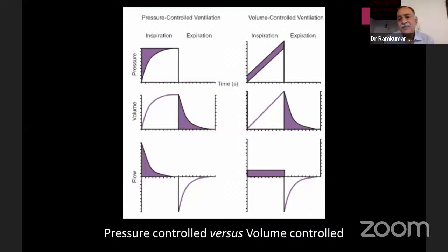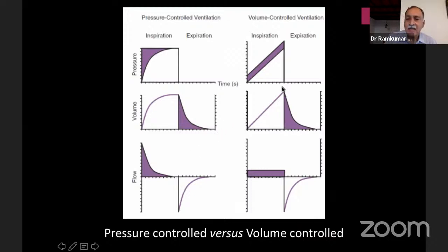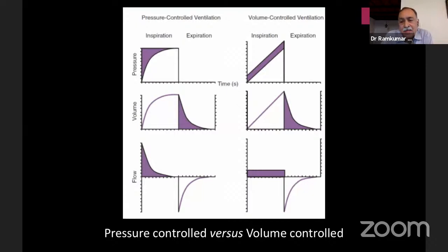A word about pressure control versus volume control: the lung is like a thin-walled balloon with potential to burst if excessive pressure is applied. When lung compliance is low and we use volume control ventilation, the set volume is delivered but pressure goes up tremendously — exposing the alveolus to very high pressures and creating barotrauma, meaning pressure-related trauma. In most COVID patients you will have to switch to pressure control ventilation, where the ventilator limits the pressure, but you need to keep an eye on the volume.